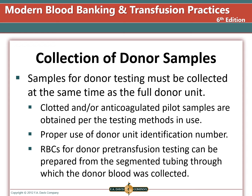Samples for blood donor testing must be collected at the same time as the full donor unit. Problems can occur if the donor unit number on the collected tubes does not match the number on the bags. Some locations will pre-label the bags and the tubes, while others will label the tubes at the time of collection. It is important for the phlebotomist to ensure that the tubes collected are labeled with the same number as the bags of blood collected.